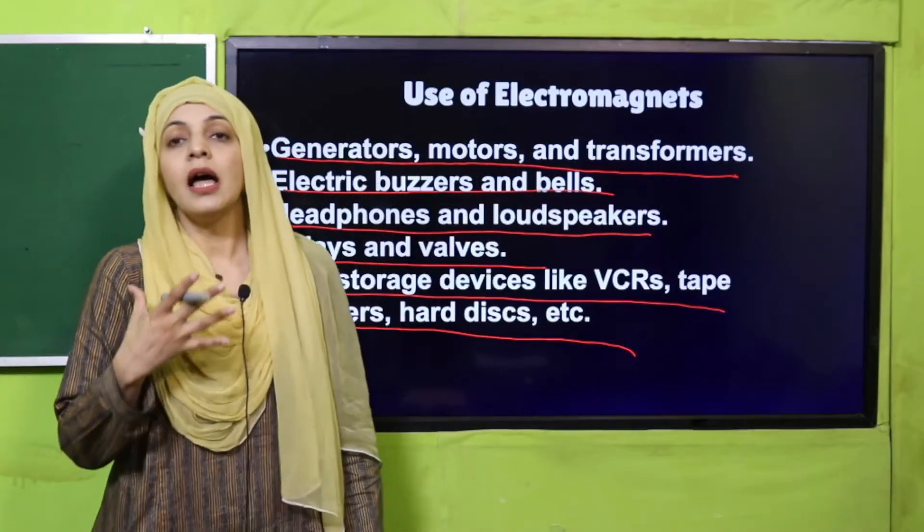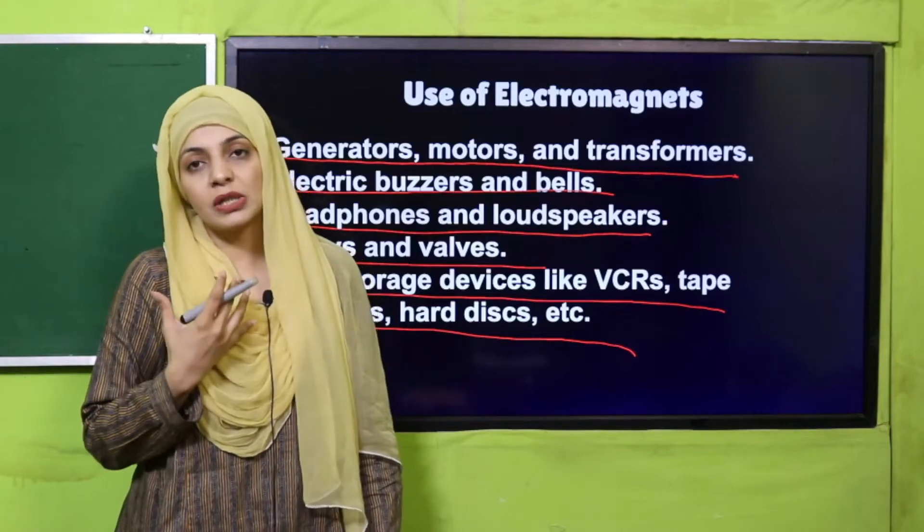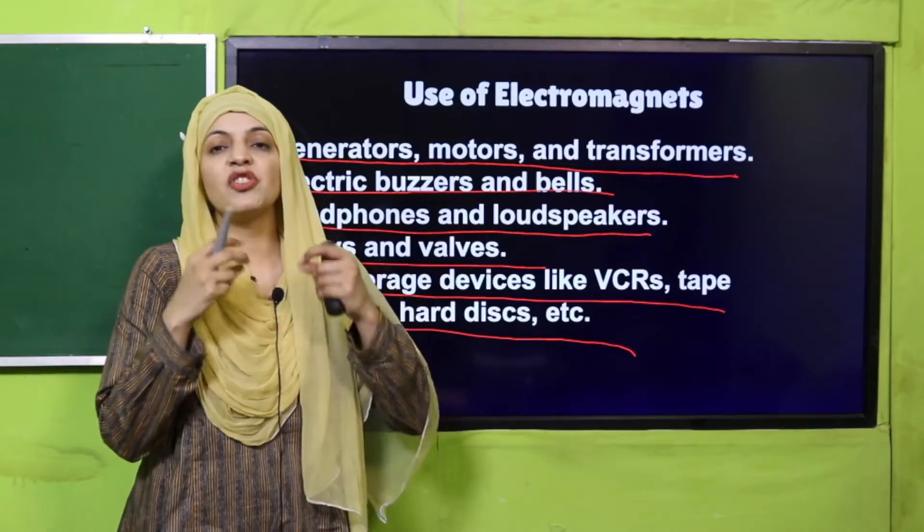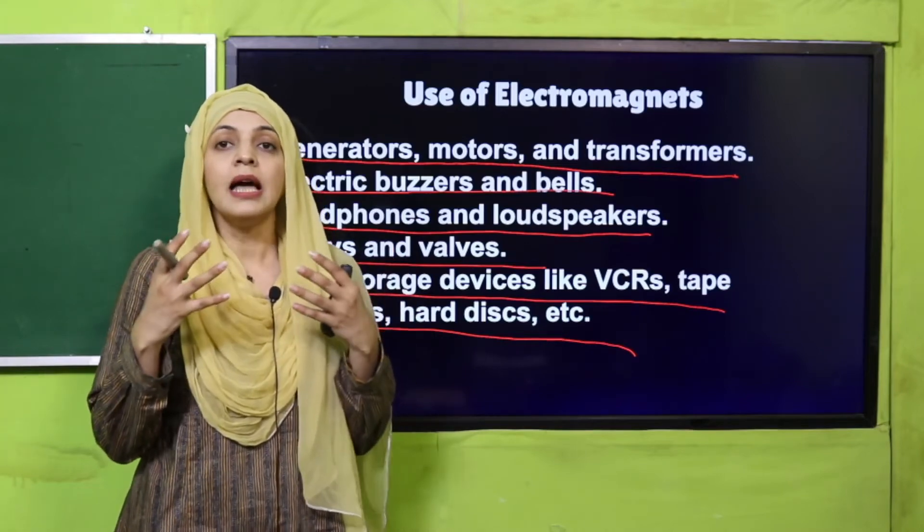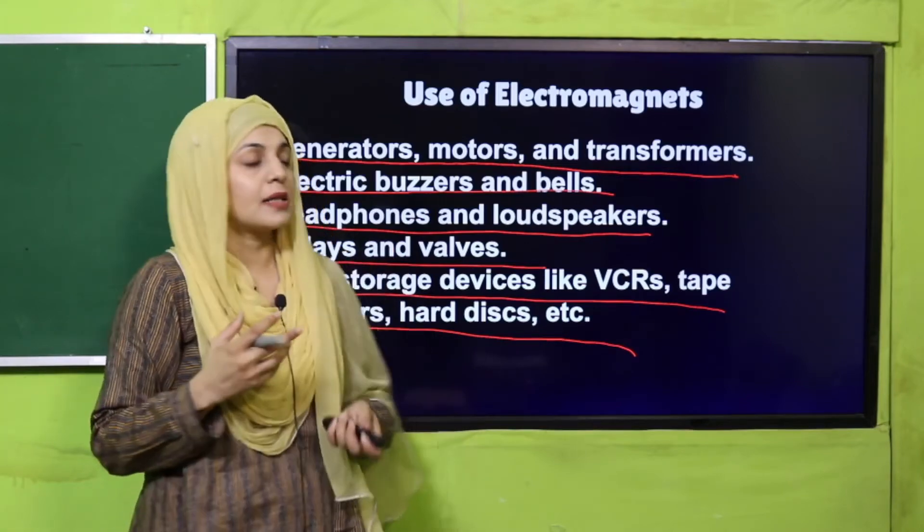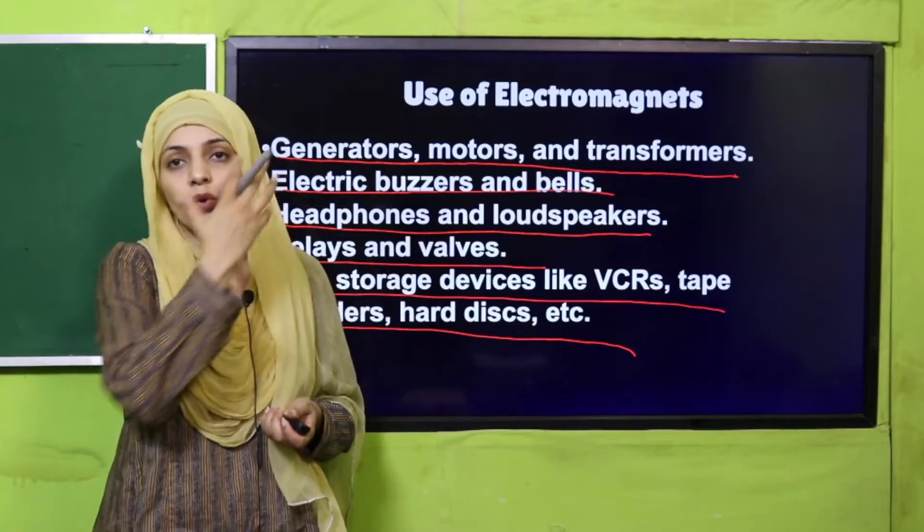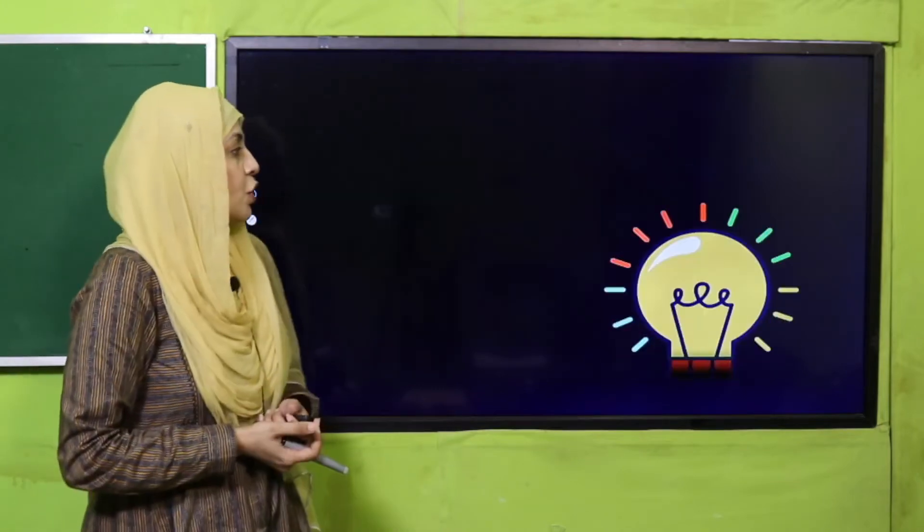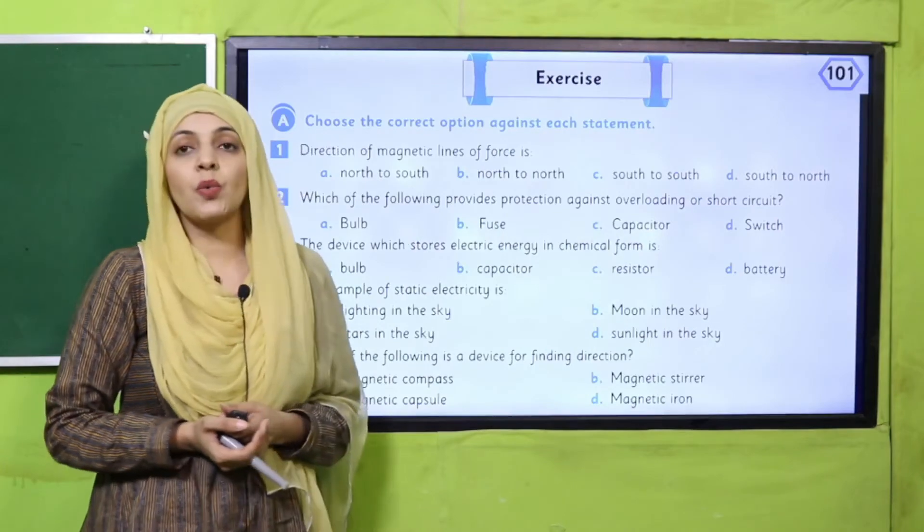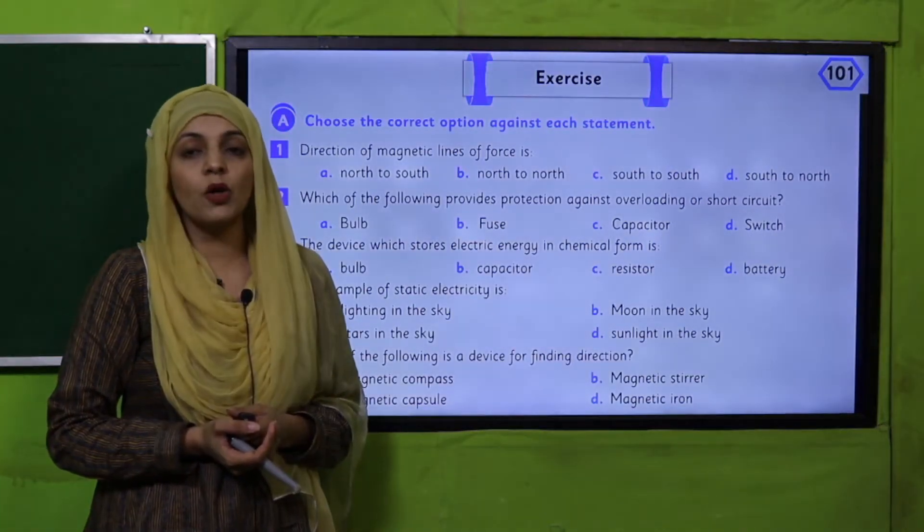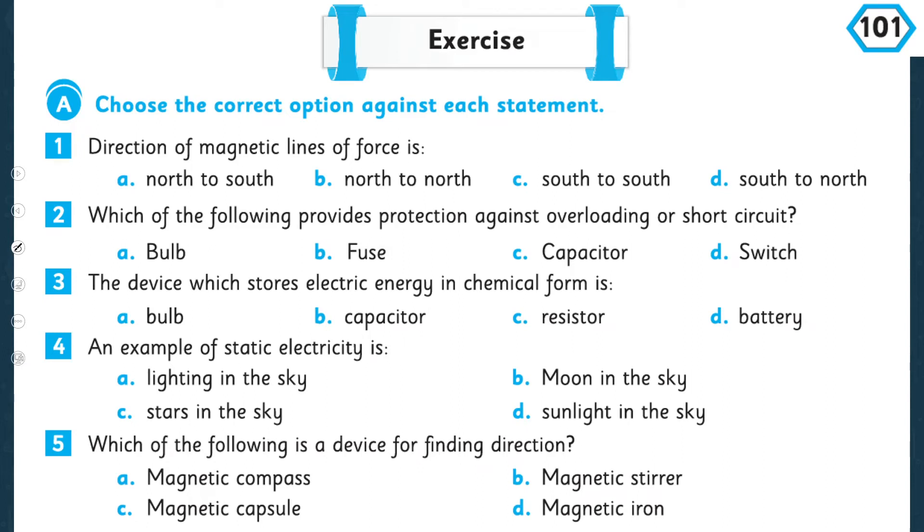headphones and loudspeakers, relays and valves, data storage devices like VCRs, tape recorders, hard disks, etc. So you understand where electromagnets are used. Using electric fields and electricity, we can magnetize objects, and that's how we can make electromagnets. My dear students, now is the time for practice.